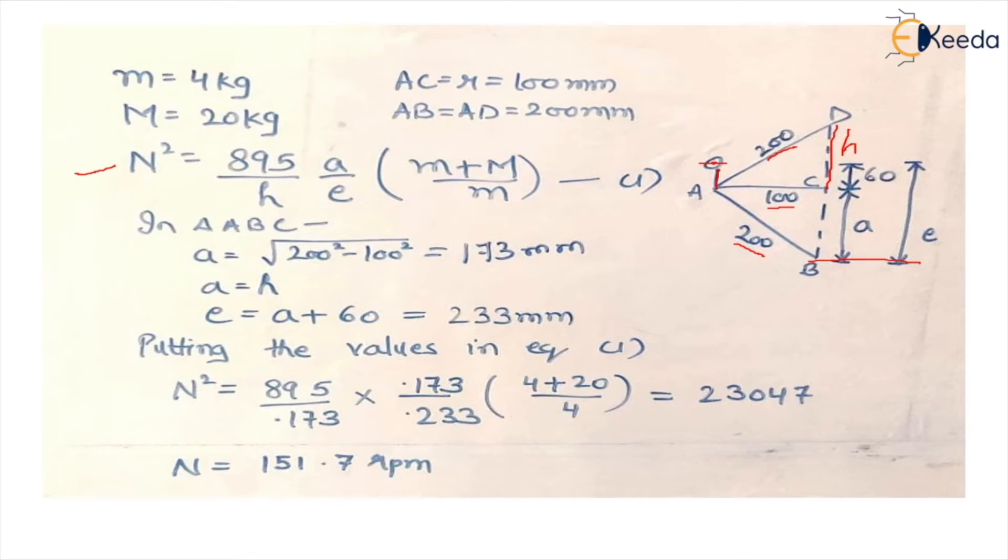Now what we are left with is E, which is A plus the length of the extension link which is given as 60 mm. So you add the values.